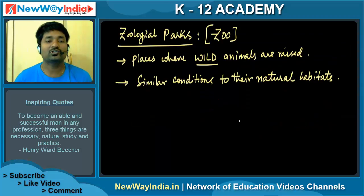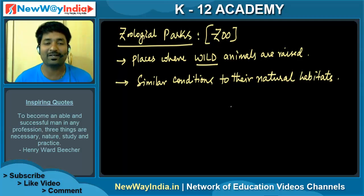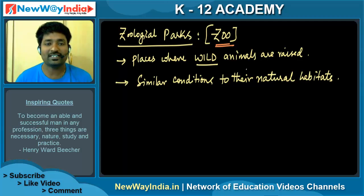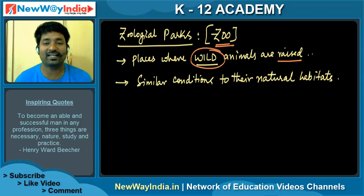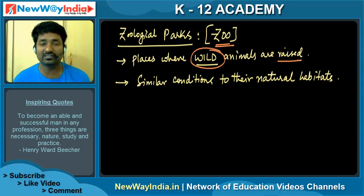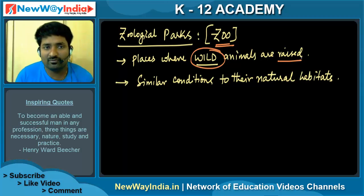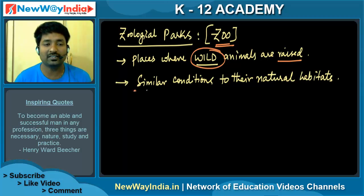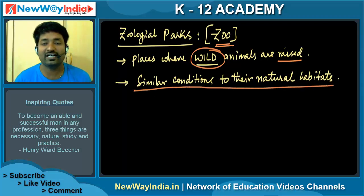The next one is zoological parks, simply called zoos. Almost all children love visiting zoological parks. These are places where wild animals like elephants, tigers, and camels are kept or raised. Importantly, conditions similar to their natural habitats are provided in the zoological parks.